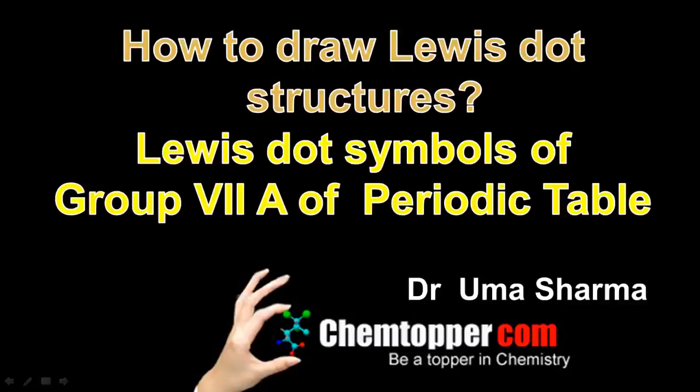Welcome back on Chemtopper.com. In the Lewis dot structure series, we are going to learn how to draw Lewis dot symbols of Group 7A elements of the periodic table.